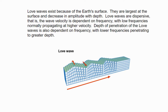Now let's understand another kind of wave called the Love wave. Love waves exist because of the earth's surface — remember it is a surface-based wave. They are largest at the surface and decrease in amplitude with depth. Love waves are dispersive in nature, meaning their velocity is dependent upon frequency, with lower frequencies normally propagating at higher velocity. The depth of penetration is also frequency-dependent, with lower frequencies penetrating to greater depth.